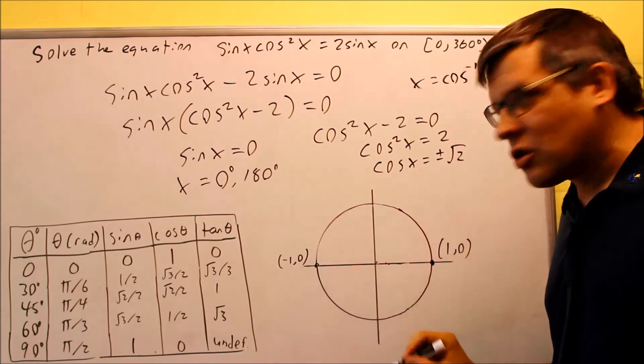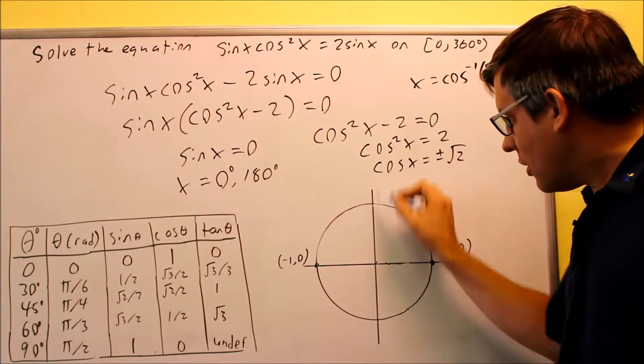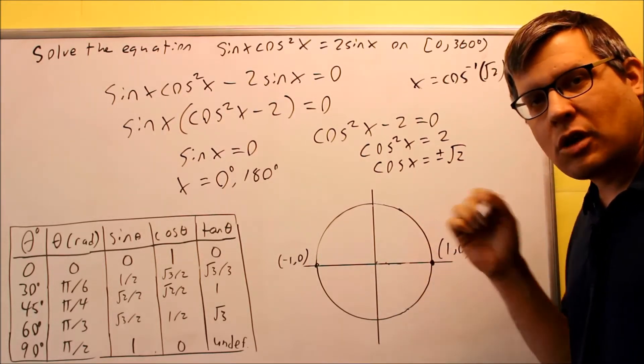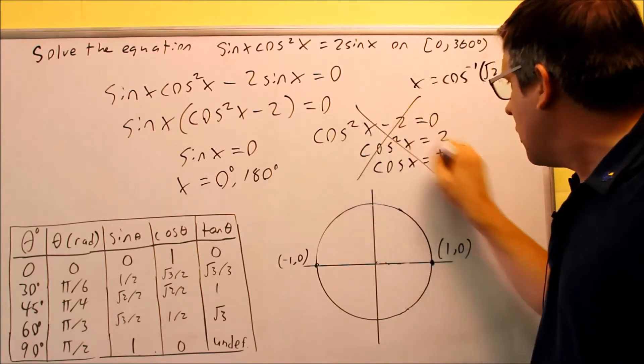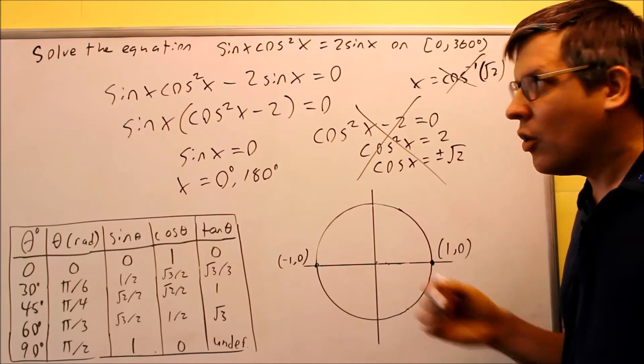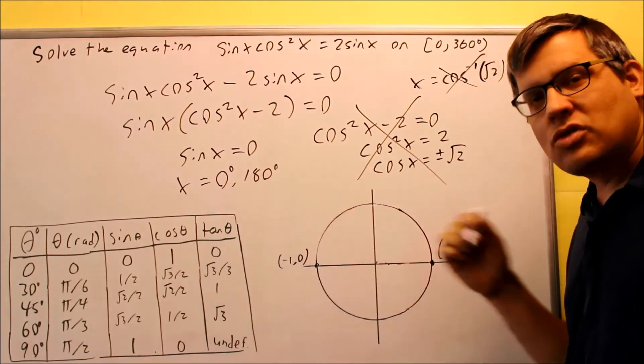All these values should come off of the unit circle. And as we see here, the biggest it could possibly be is going to be one. So there's no way I can get an x value that's 1.41 that's not on my circle. So because of that, that means that this whole thing is crossed out. That's not going to give me any answer. So therefore, the only solutions I'm going to have for this particular problem are going to be only 0 and 180.